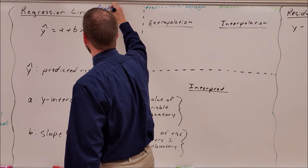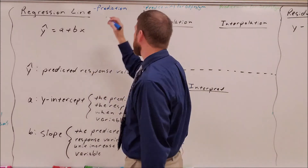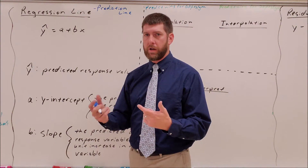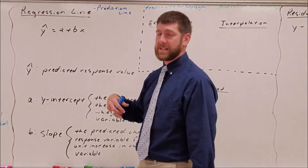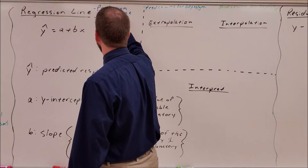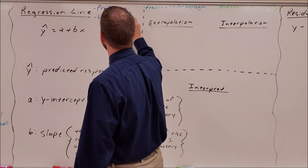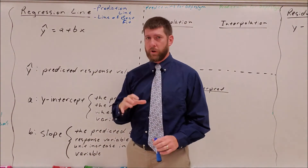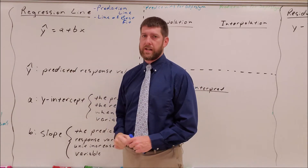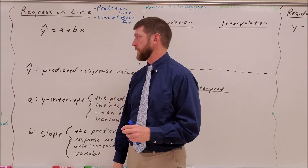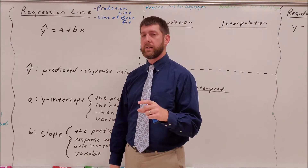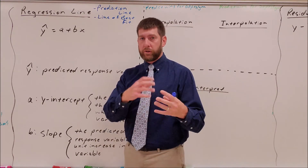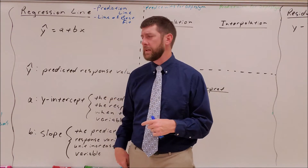A regression line is nothing more than a line — an equation — meant to help us predict what's going to go on in the relationship between two variables. You've probably called it a line of best fit before. In the first part of this lecture we're going to discuss what the components of this line are, then jump to the calculator and calculate the equation. In the second part we'll talk about how to come up with each of those individual components.